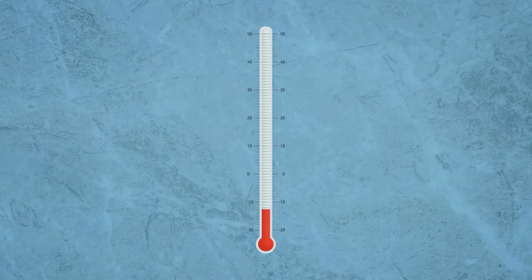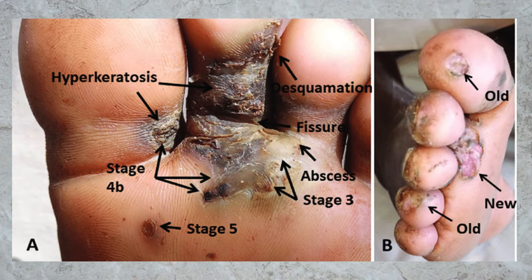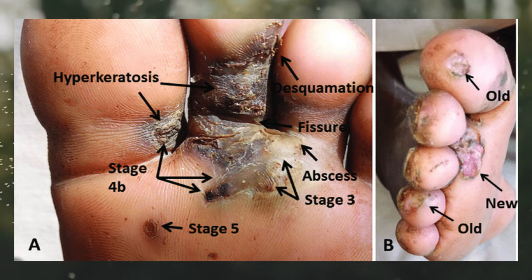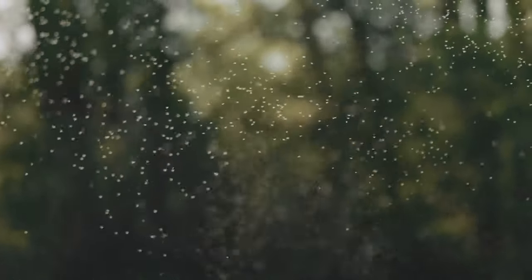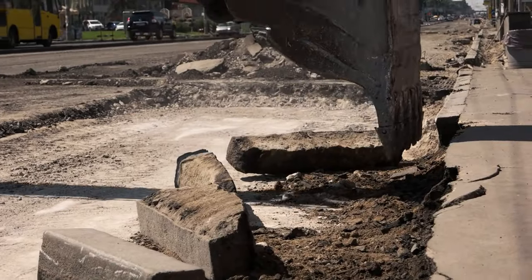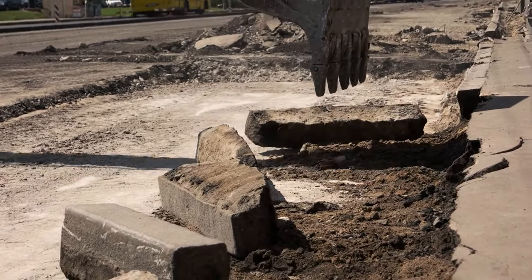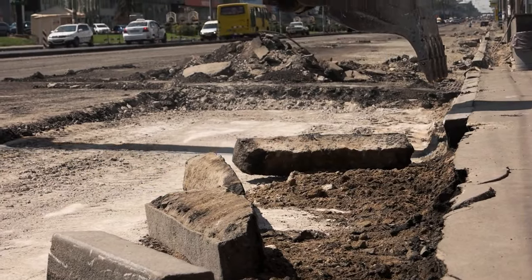In light of these results, the study proposes targeted interventions to curb Tunga penetrans infestations. Specifically, manipulating temperature and relative humidity levels to create suboptimal conditions for flea growth is recommended. Additionally, addressing the prevalence of unpaved floors and repairing cracked pavements can contribute significantly to discouraging infestations.